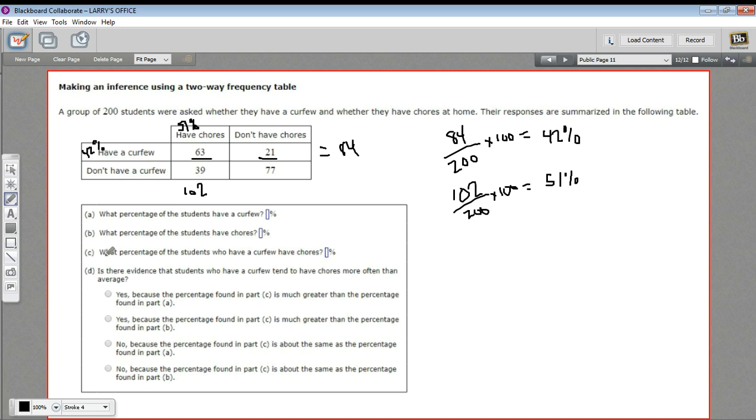The next question is where it starts to get interesting. It says, what percentage of the students who have a curfew have chores? So we're only looking now at this line right here, the have a curfew. What percentage of those have chores? Well, it's 63 out of something. It's not 63 out of 200, because we're not even looking at the kids who don't have a curfew. It's actually 63 out of 84. That's the total of the kids who have a curfew. So let's figure that percentage.